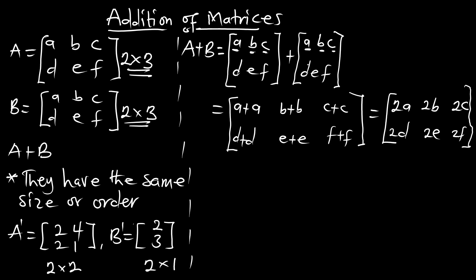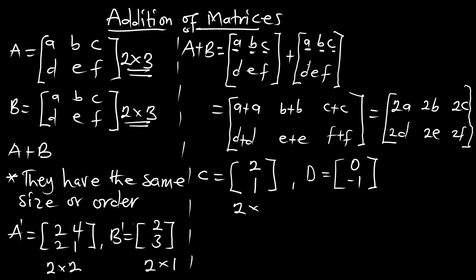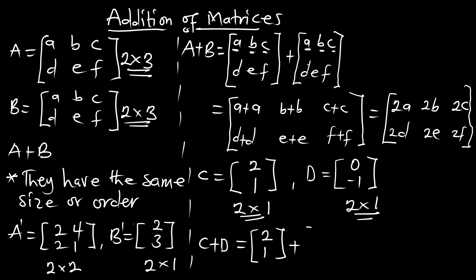Let's also see this. If we are given a matrix C of the order 2, 1 and matrix D of the order 0, negative 1 — first we must check if they have the same size. This is a 2 by 1 matrix, and this is also a 2 by 1 matrix. They have the same size, so they can be added. So C plus D is going to be 2 plus 0, which is 2, and 1 plus negative 1, which is 0.